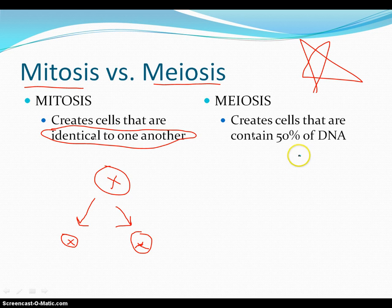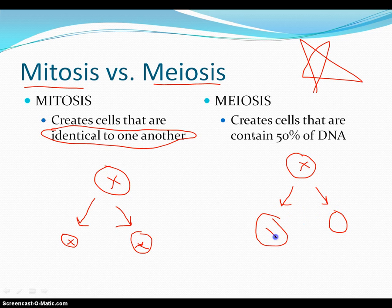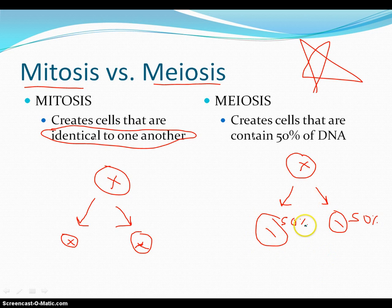Meiosis is a little bit different. Let's say I have a cell that has X amount of chromosomes. Every cell that it produces is going to have half of that number. Each one of those cells produced is going to have half of X — so each one is going to have 50%. The man makes 50% and the woman makes another 50%, and when they come together, they're going to get a whole baby.